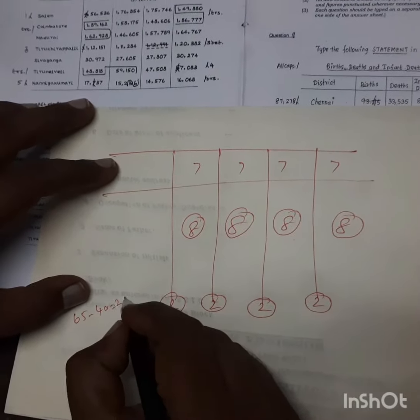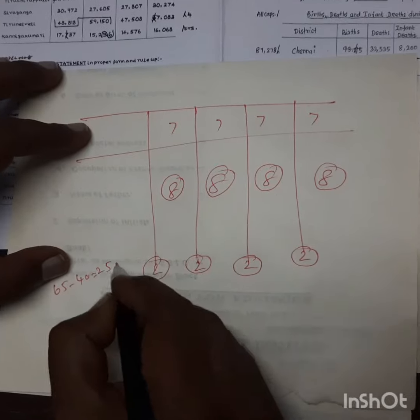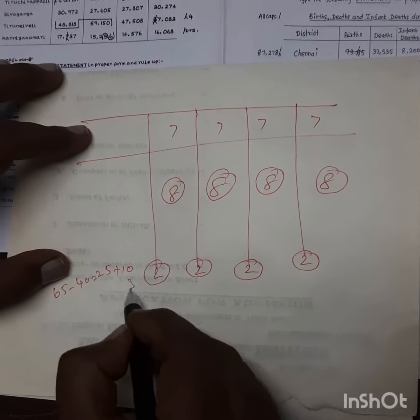How to calculate: 60 minus 40, 25, plus 10, 35.